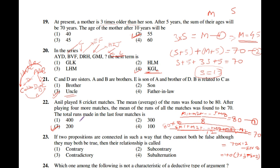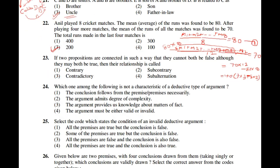Question number 23: If propositions are connected in such a way that they may both be true but cannot both be false, then their relationship is sub-contrary. So the correct option is the second one — sub-contrary.